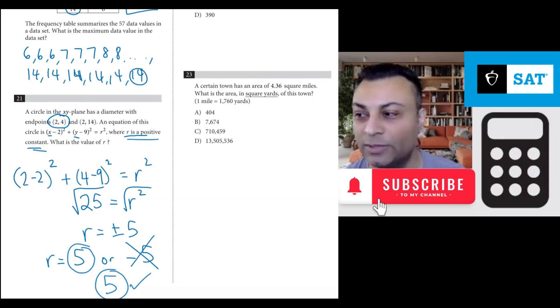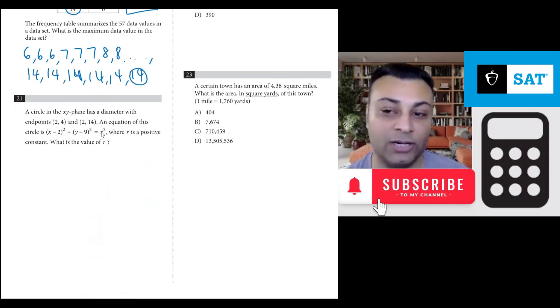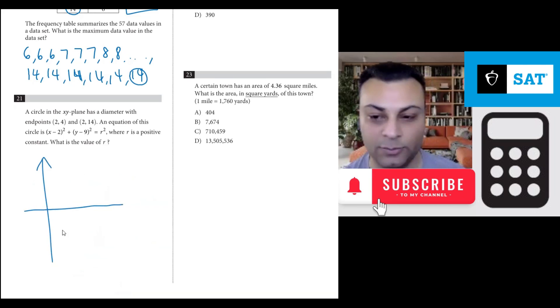I'd like to show you another way to do this problem. We need to know that r is the radius of the circle. The center of the circle is (2,9), and the endpoints of the diameter are (2,4) and (2,14). So let's go with that approach. Let's put it over here.